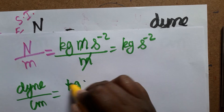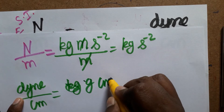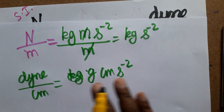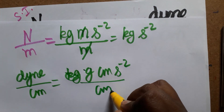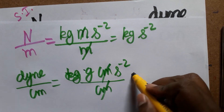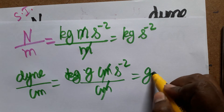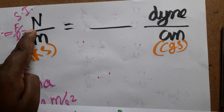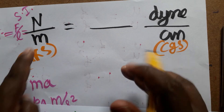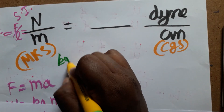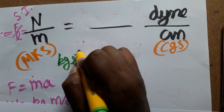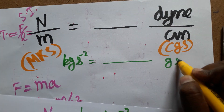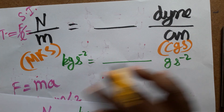Dyn is the force unit in the CGS system. Dyn equals gram·centimeter·s⁻². Divided by centimeter, the centimeter cancels, leaving gram·s⁻². So instead of converting N/m directly, we convert kg·s⁻² to gram·s⁻².